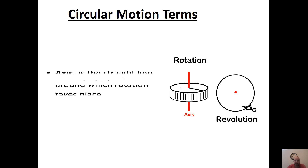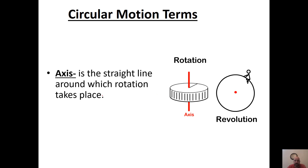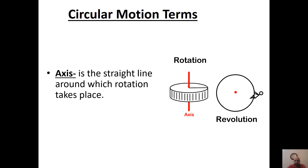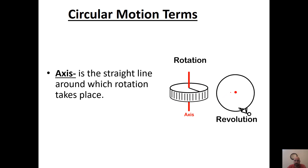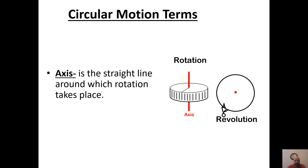So we have rotation versus revolution. In order to describe these, we need to know what the axis is. The axis is going to be a center point right here in the middle, where rotation or revolution would take place around.